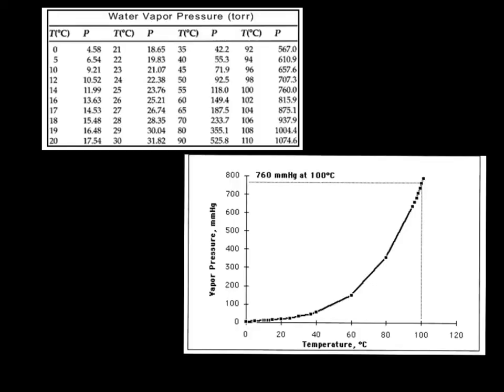The vapor pressure of water is totally dependent upon the temperature in the room. At zero degrees, you've got 4.58 torr. At 40 degrees, you've got 55.3 torr. At 100 degrees, you've got 760 torr. And it might not be obvious from the data table, but as you increase the temperature, the vapor pressure gets larger — not linearly, but exponentially. So you can see from this graph, as I increase the temperature, the vapor pressure increases more and more. You've got a nice exponential growth there.